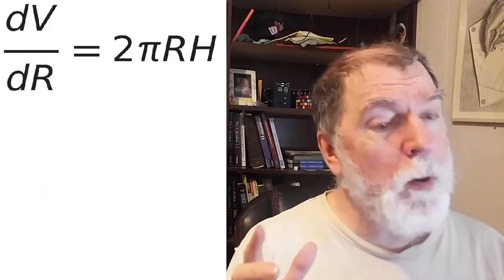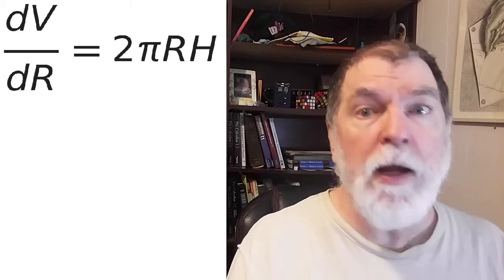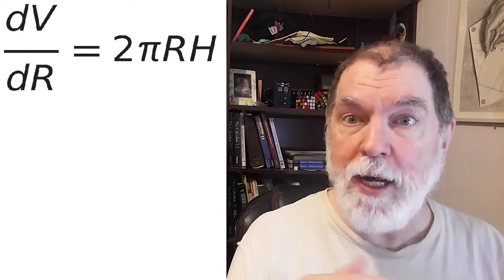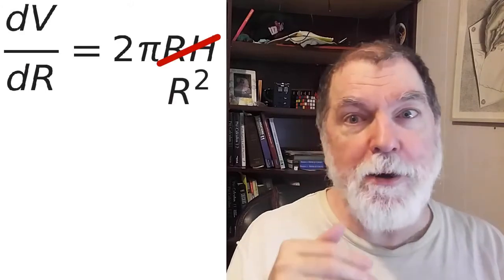Again, we've already worked out how the volume changes with the radius. That's dV by dR. We had 2 pi R times H. But at this instant, R and H are the same.